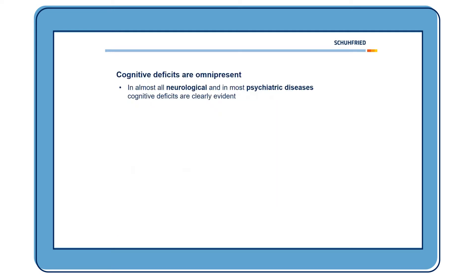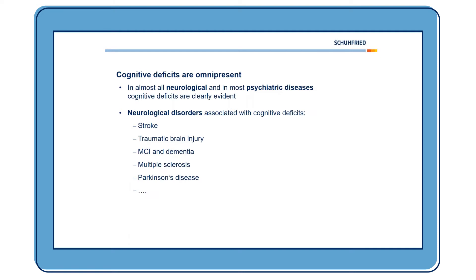So why do we need neuropsychological assessments at all? As you probably know, cognitive deficits are omnipresent. In almost all neurological and most psychiatric diseases, cognitive deficits are clearly evident. Here are some examples of neurological disorders associated with cognitive deficits: stroke, traumatic brain injury, mild cognitive impairment, dementia, and so on.